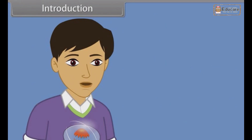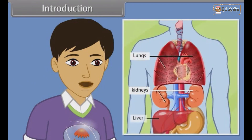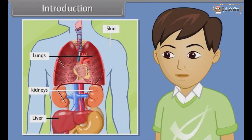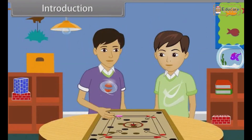You know that the major excretory organs of our body are kidneys, lungs, liver and skin. This is too interesting, brother. Will you tell me more of it? Sure. In this lesson, you will learn about excretory products and their elimination in the human body.